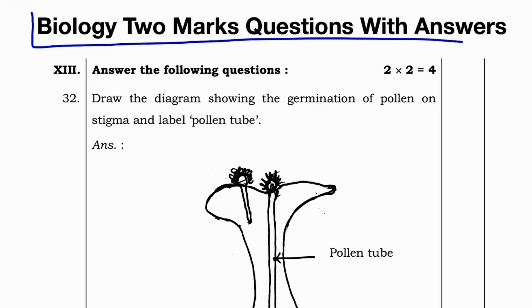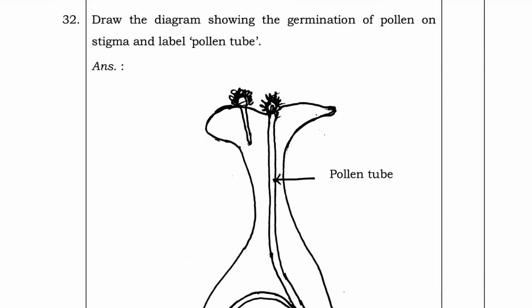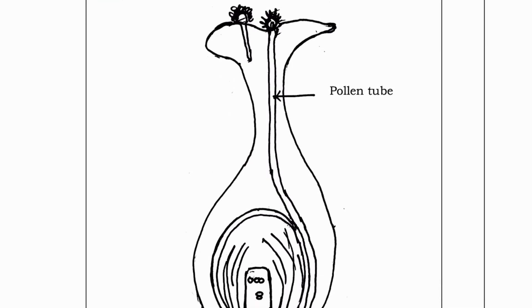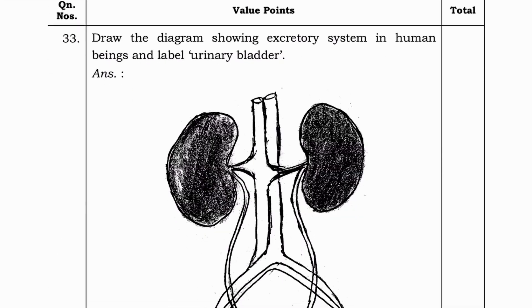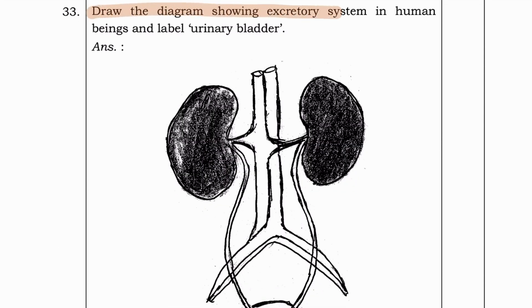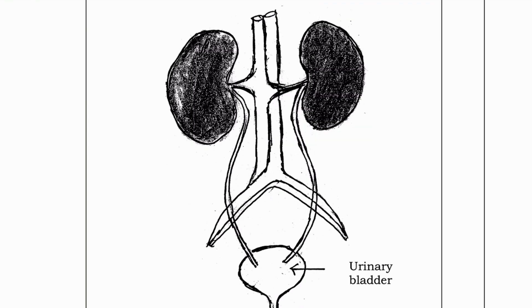Biology. Two marks questions with answers. Draw the diagram showing the germination of pollen on stigma and label pollen tube. Here, they have labeled pollen tube. Draw the diagram showing excretory system in human beings and label urinary bladder. Excretory system is shown here.